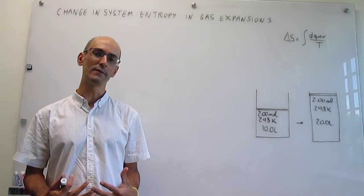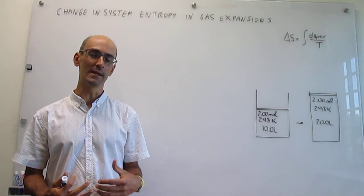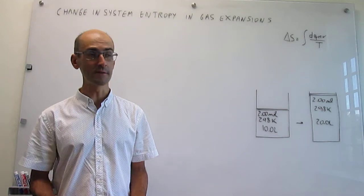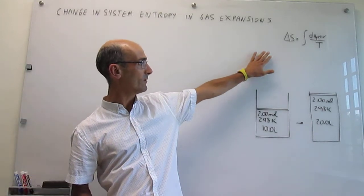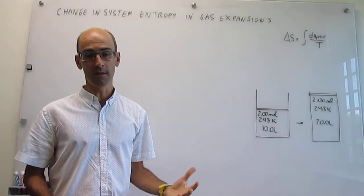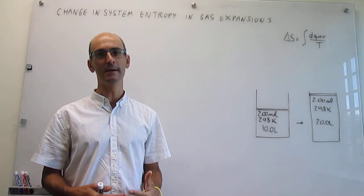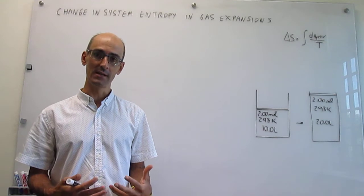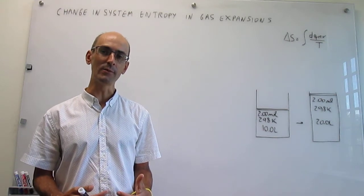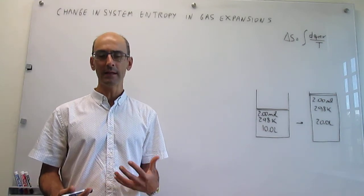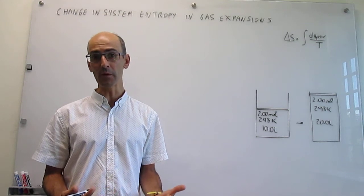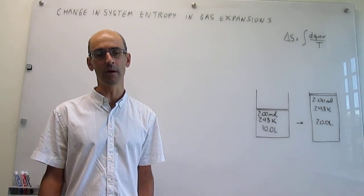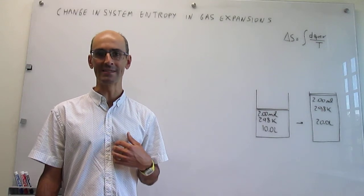In the last video, we introduced elementary concepts in entropy, such as the thermodynamic definition of entropy, and also the second law, which states that if a process is spontaneous, then the change in entropy in the universe is positive. And if the process is occurring at equilibrium, then the change in entropy in the universe is zero, or the entropy of the universe stays constant.